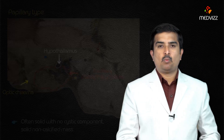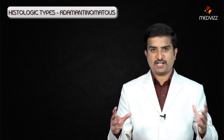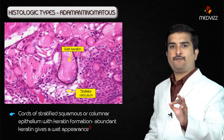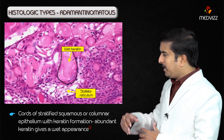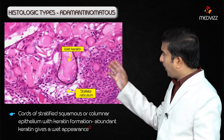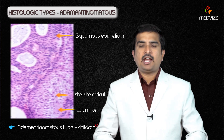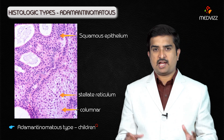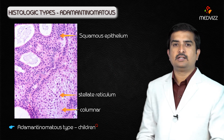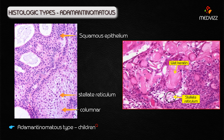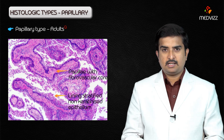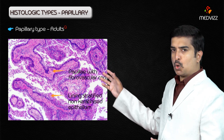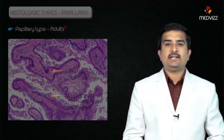In histopathology, craniopharyngiomas show cords of stratified squamous or columnar epithelium with keratin formation — abundant keratin giving a wet appearance on histological examination. The adamantinomatous type, more commonly seen in children, shows a stellate reticulum. The papillary type, more commonly seen in adults, has a fibrovascular core — that is, papillary structures with a fibrovascular core.